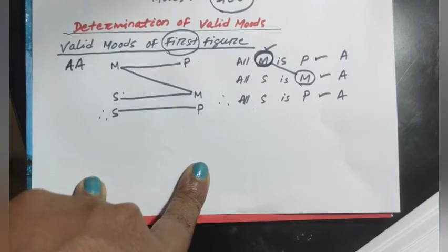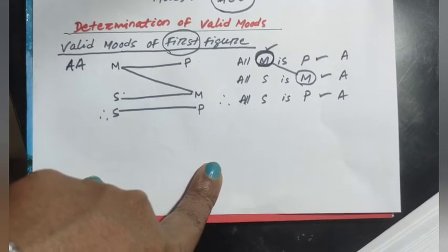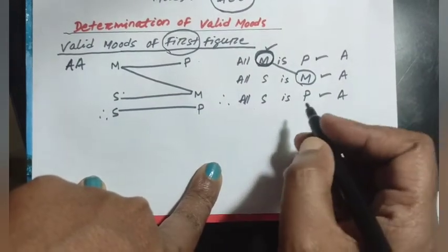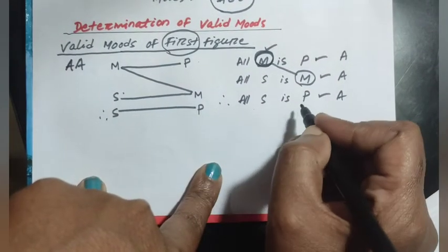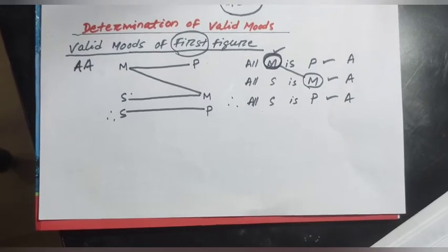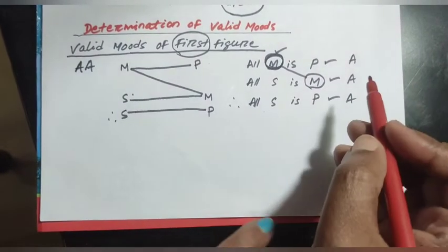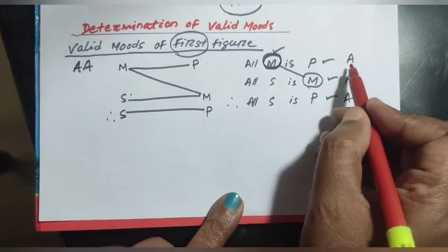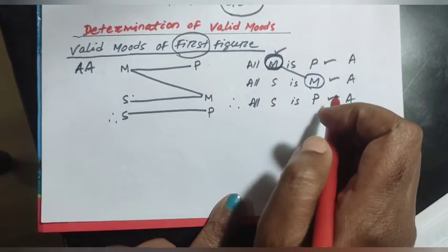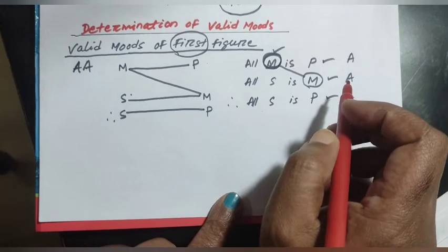The rule is: if a term is distributed in the conclusion, it must also be distributed in the premises. The minor term is distributed in the conclusion because universal proposition A distributes its subject. S is distributed in the minor premise as well. All three propositions A, A, A are universal propositions and universal propositions distribute their subject.